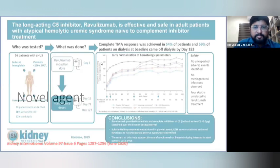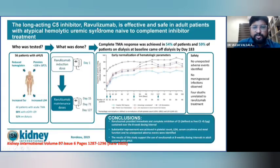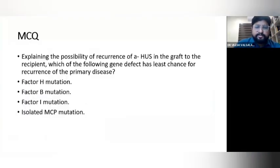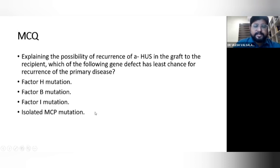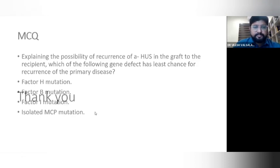A novel agent other than eculizumab is ravulizumab, a long-acting C5 inhibitor, which will likely reduce dosing intervals to up to 8 weeks. An MCQ for postgraduates: which mutation has the least chance of recurrence of the primary disease in the graft — factor H mutation, factor B mutation, factor I, or isolated MCP? As discussed, isolated MCP has the least chance of recurrence.